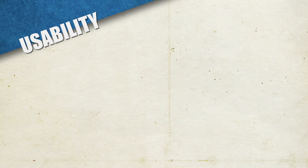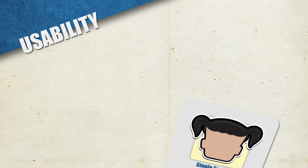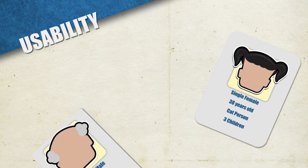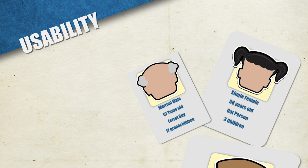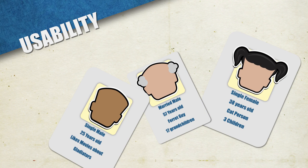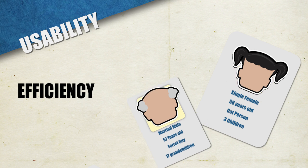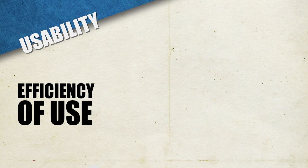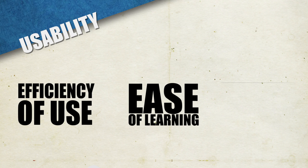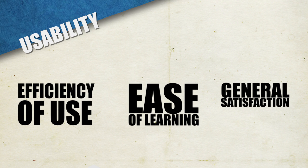When designing for usability, you should keep the user's psychological profile and physiology in mind. Usability projects are designed for efficiency of use, ease of learning, and general satisfaction of use.